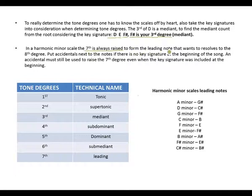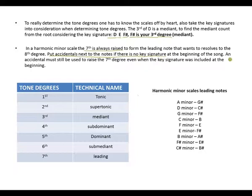In a harmonic minor scale, the seventh is always raised to form the leading note that wants to resolve to the eighth degree. Put accidentals next to the notes if there is no key signature. Remember: if there's no key signature at the beginning of the piece, an accidental must still be used to raise the seventh degree, even when the key signature was included at the beginning.